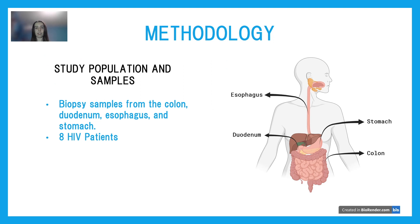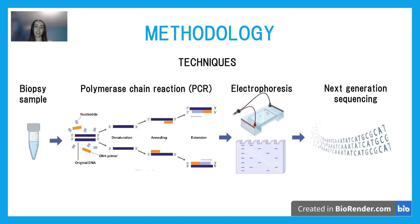In order to create the dataset necessary to reach the research objectives, we need to amplify certain regions of the HIV genome in patient samples in order to have enough DNA to be detected by sequencing. We have access to biopsy samples from the colon, duodenum, esophagus, and stomach from eight patients, and samples from multiple visits, which allow us to study the evolution of HIV over time. We're using a lab technique called polymerase chain reaction to amplify only the desired sequence of the HIV genome — in this project, that's the RT and the NEF region. PCR works by using each DNA strand as a template for the next round, which effectively multiplies the DNA exponentially.